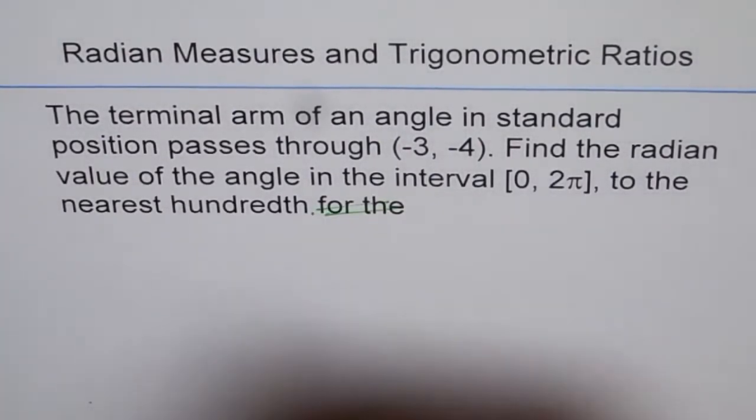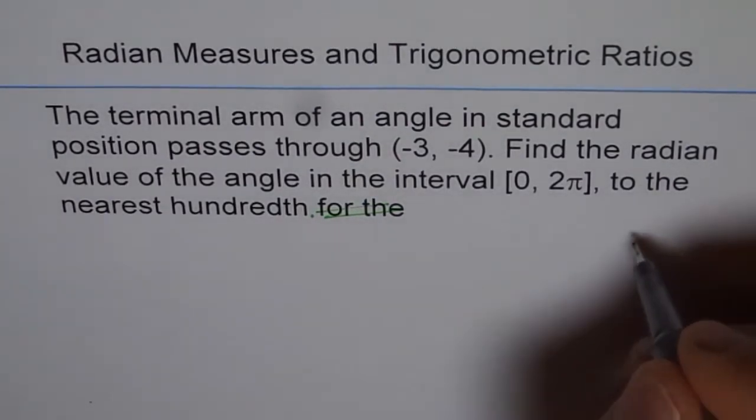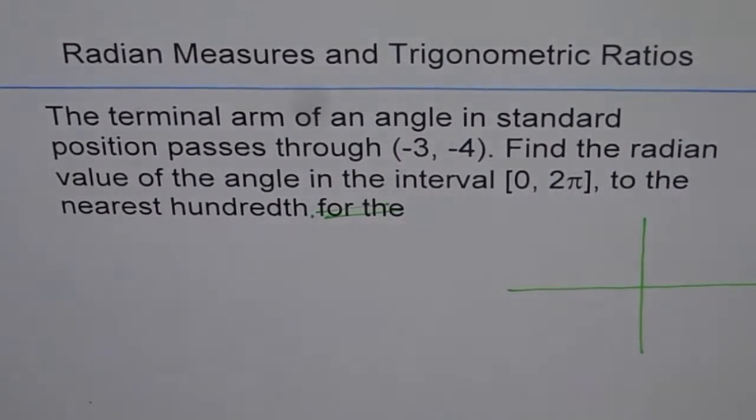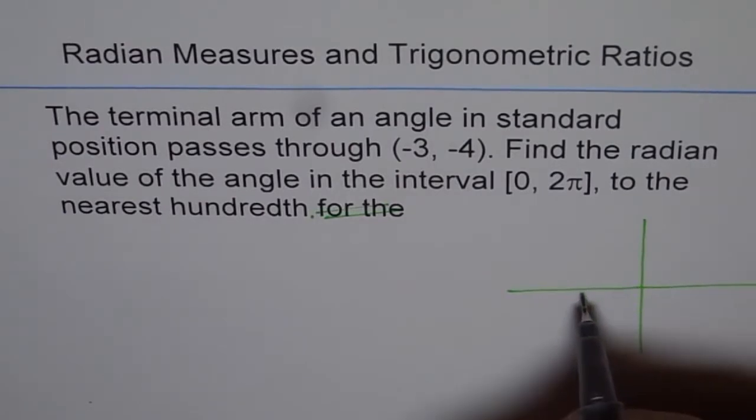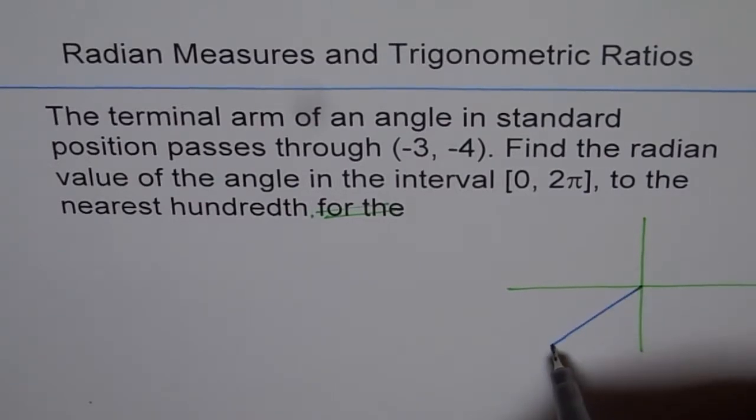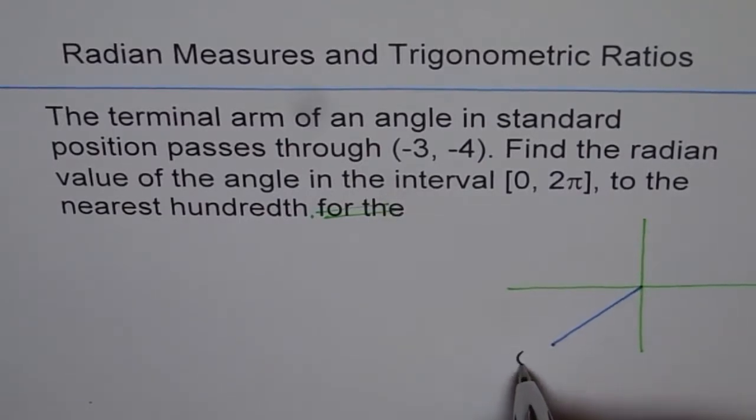We can close it here. So let's first figure out where the point is on our coordinate plane. So let's say this is our coordinate plane. So (-3, -4), that means -3 and -4. So somewhere here, right. So let's make our terminal arm. So that's the point where the terminal arm passes through (-3, -4).